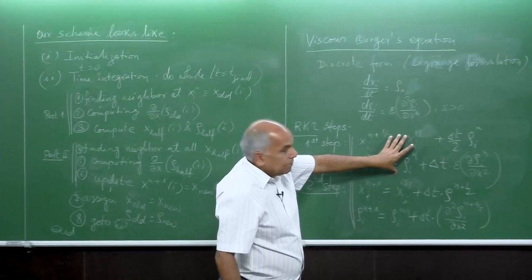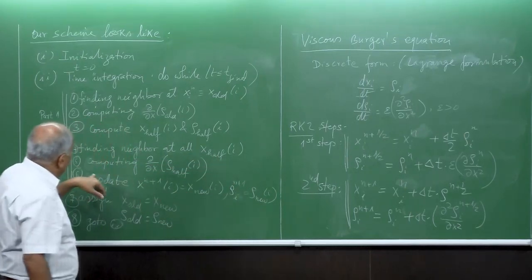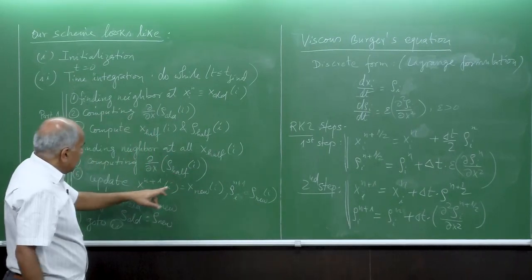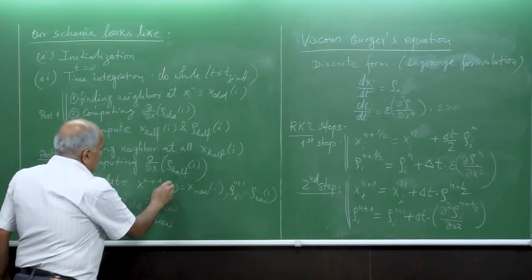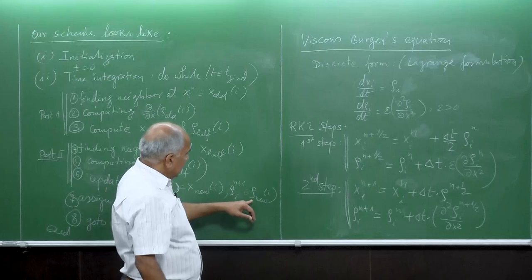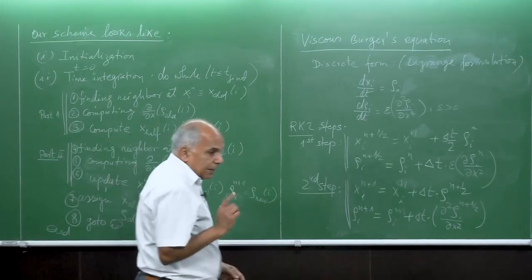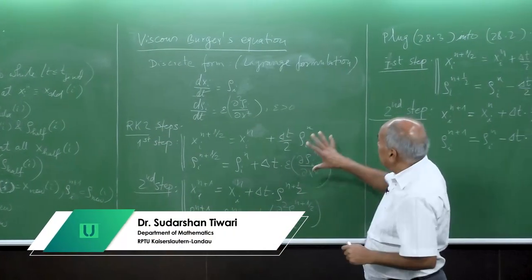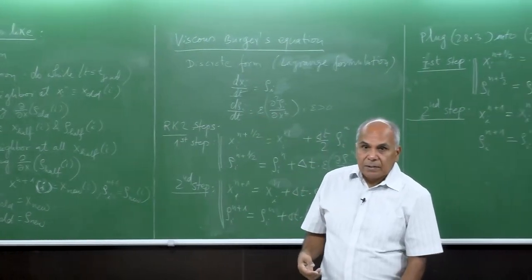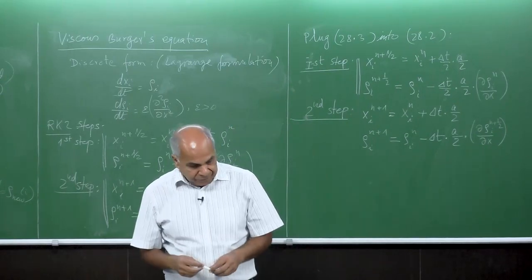Then compute the second-order partial derivative of rho_i^{n+1/2} at the new position. This gives rho_new, and I assign the old value as the new value. In the next lecture I will show you how we implement this equation numerically — the implementation of this algorithm. I think we stop here today. See you in the next lecture.